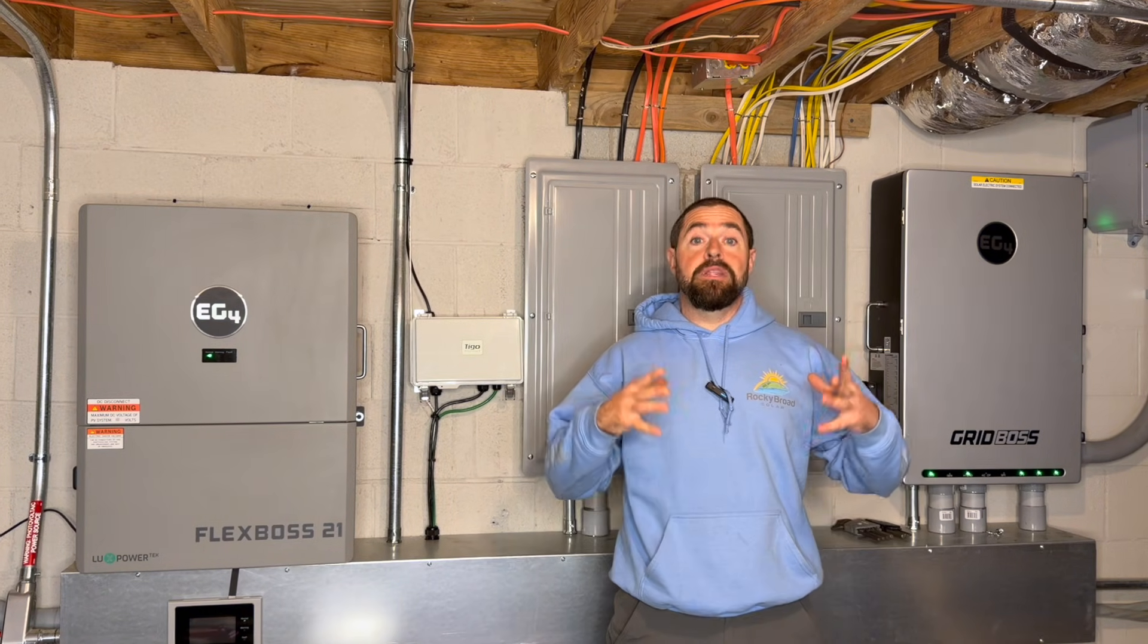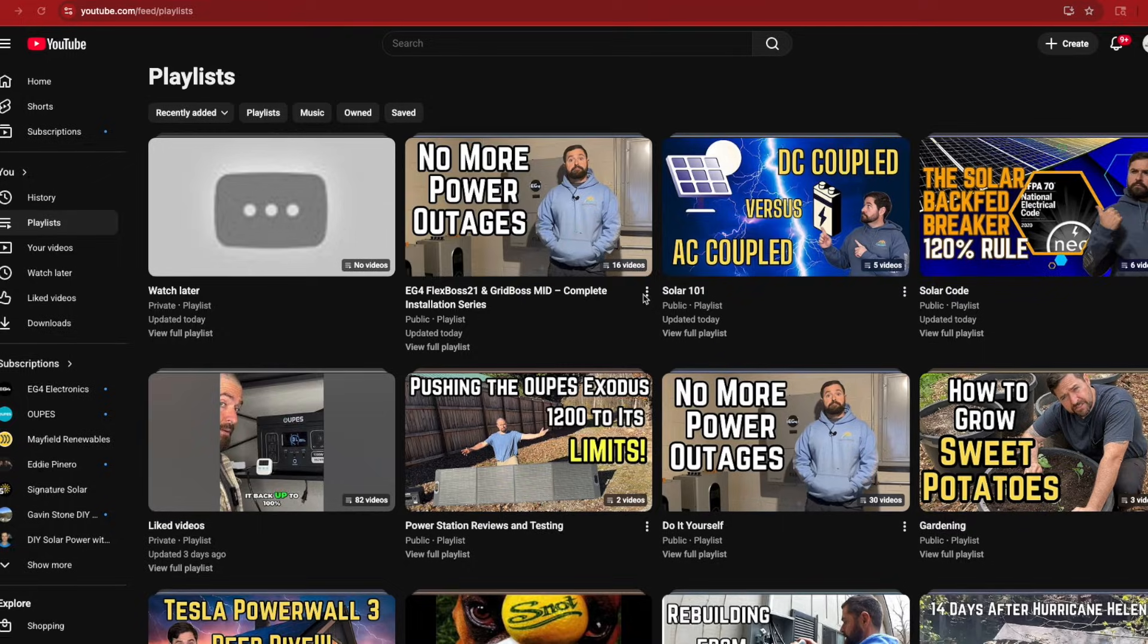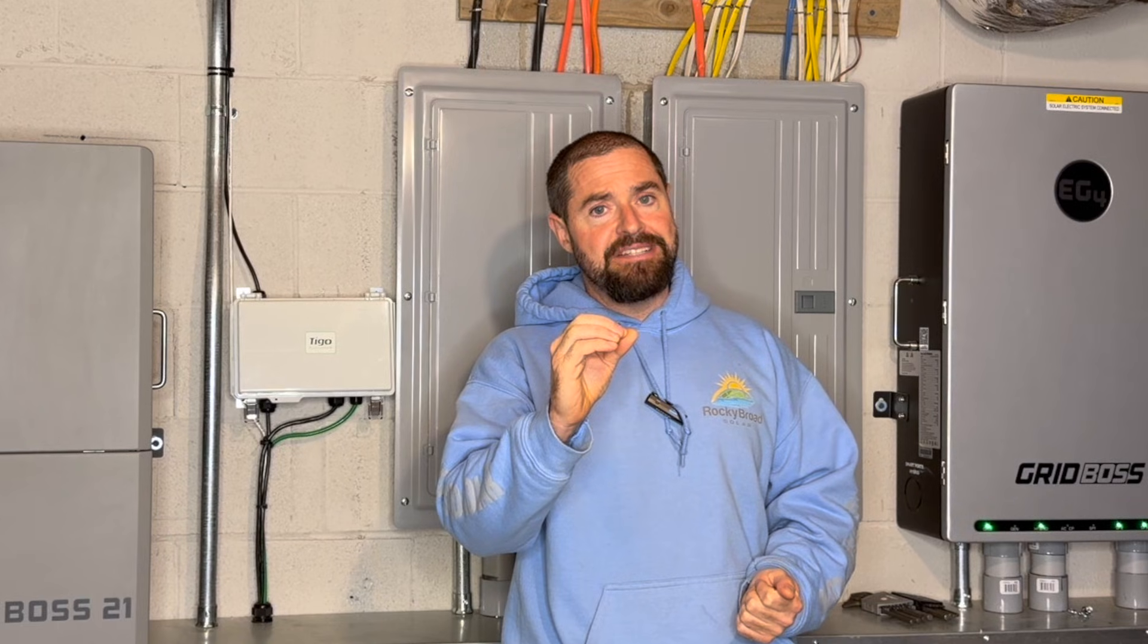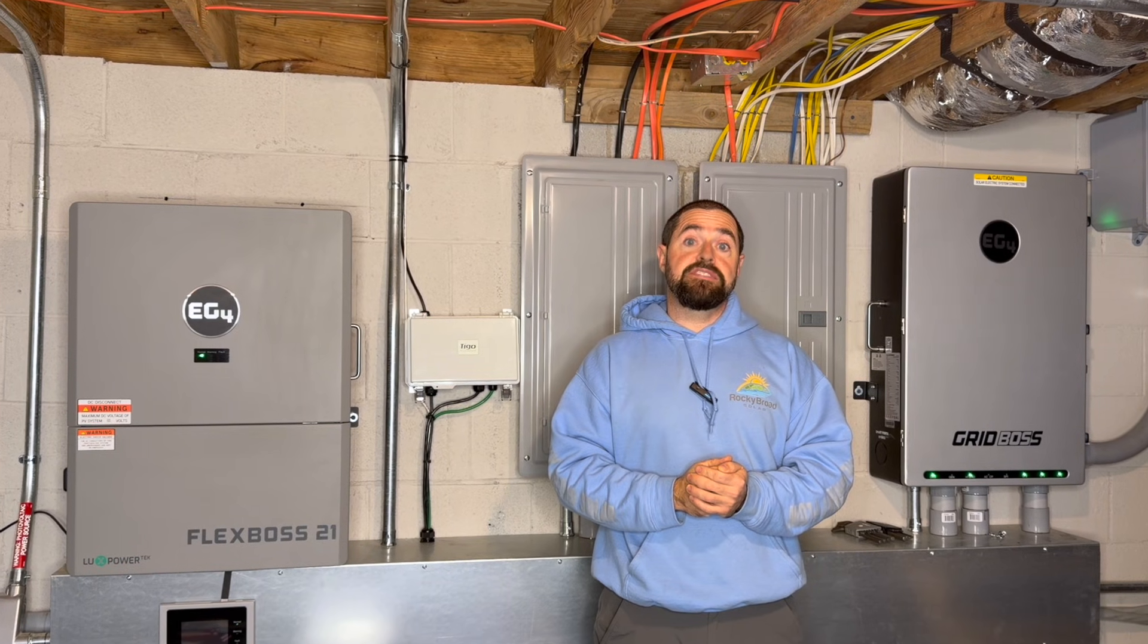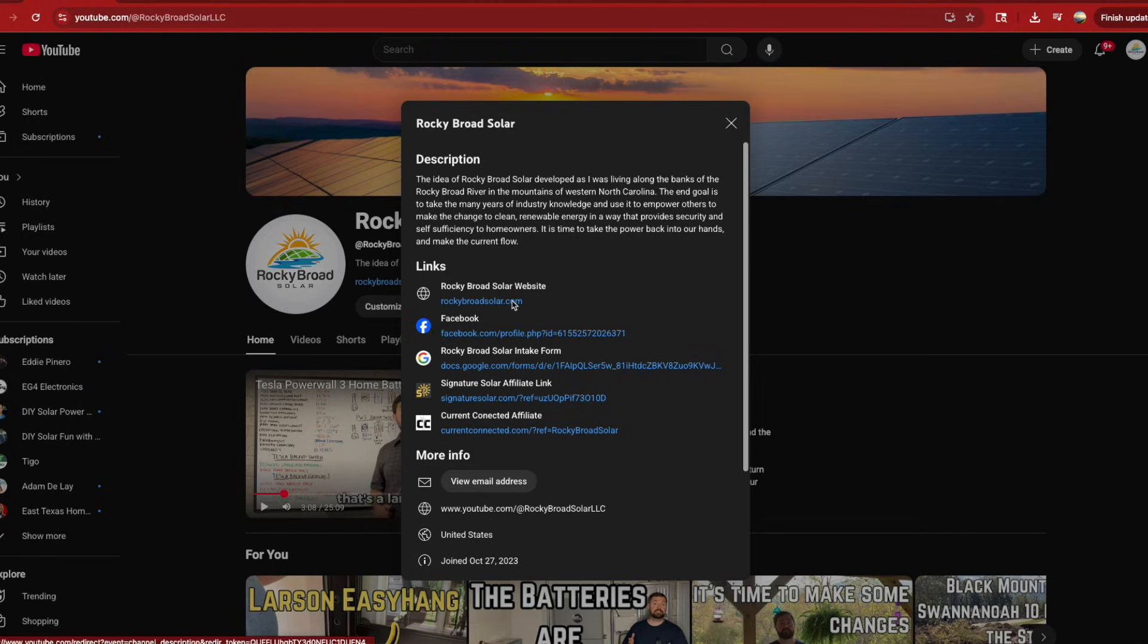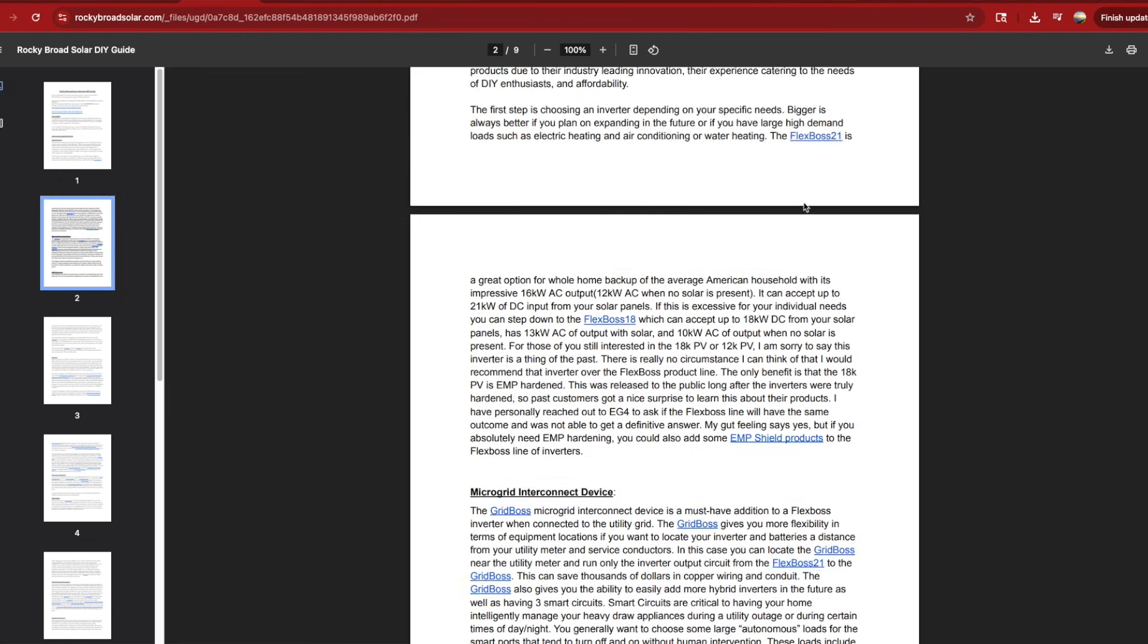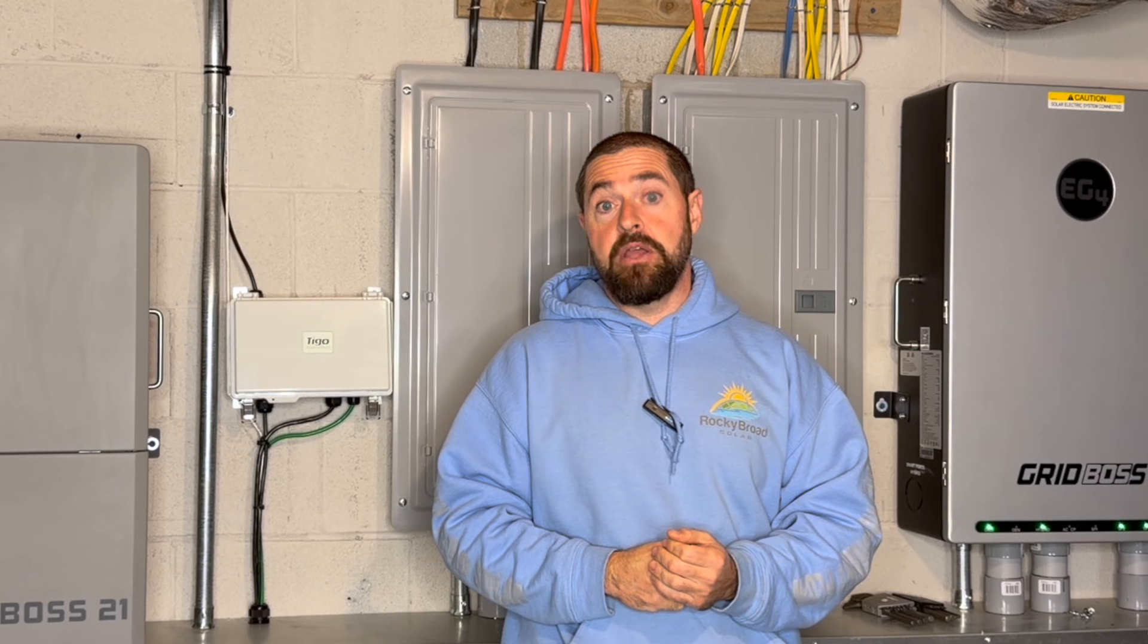If you're a DIYer out there feeling a little bit overwhelmed on a system like this, I've got two suggestions. One, go ahead and check out our full installation series on the EG4 grid boss flex boss combo on a website. I think it's up to about 15 videos or so by now. It's going to give you really detailed step-by-step instructions showing you how to do every last step of the process and how to get your system installed in a professional code compliant manner. Second, go to RockyBroadSolar.com. We've got our ultimate DIY guide you can download for free. It's going to give you some more helpful tips and tricks, help those that are still trying to determine what equipment is best for their specific scenario.